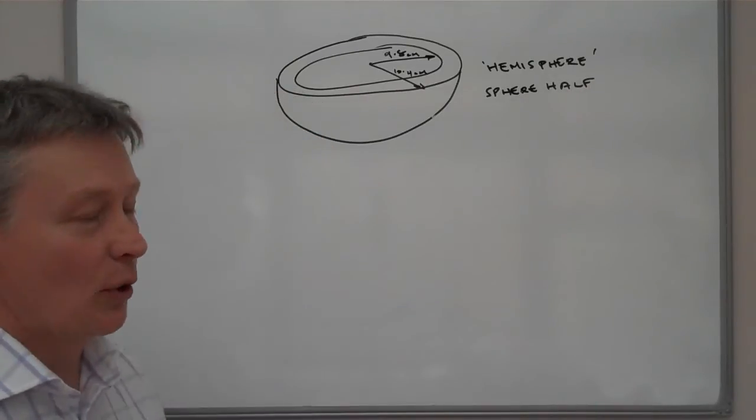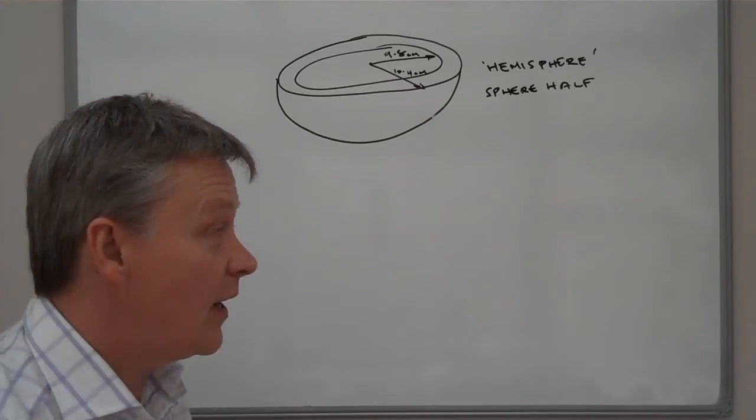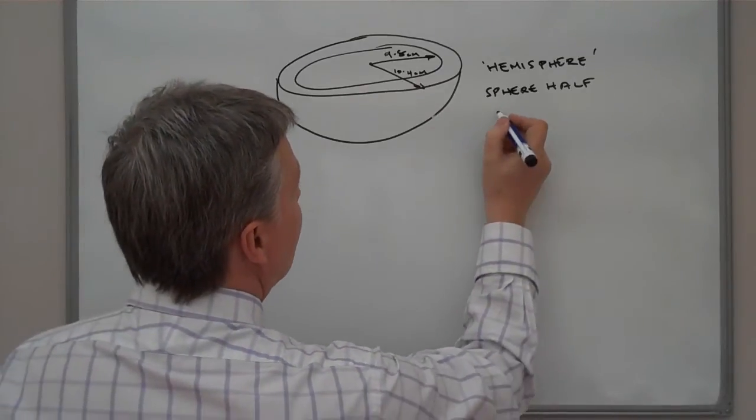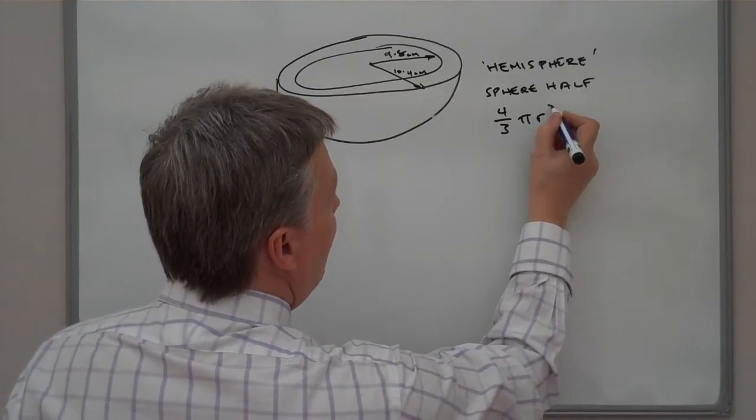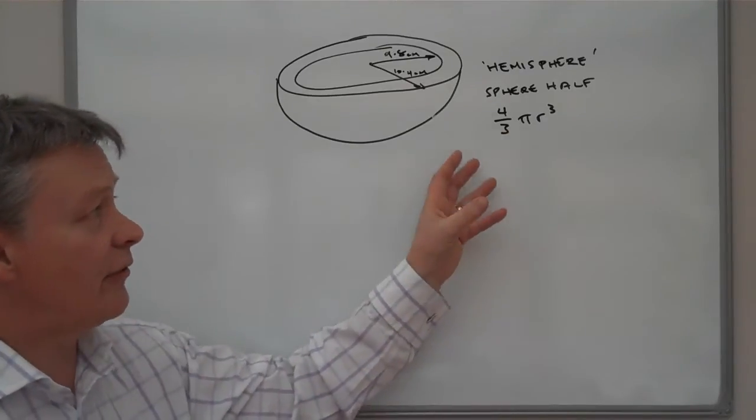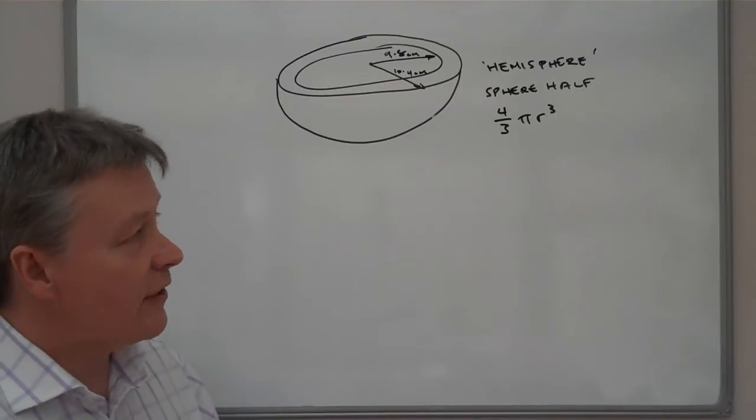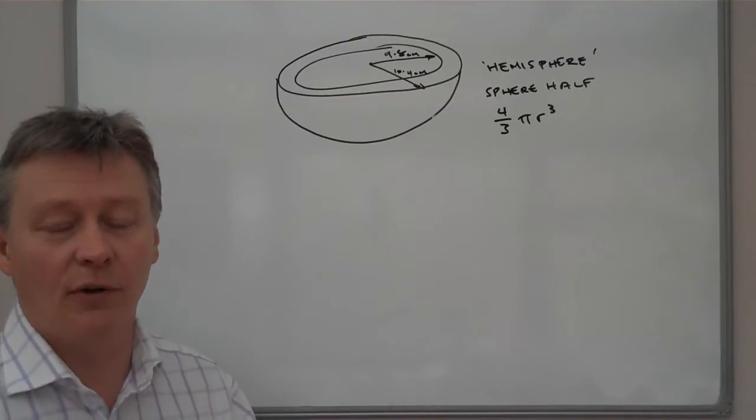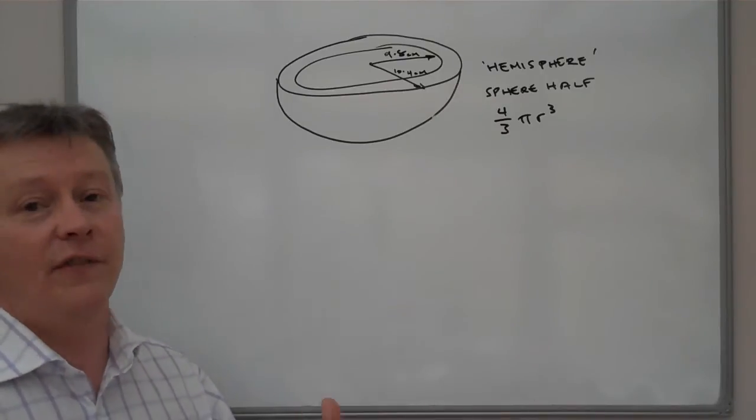Now in the front of the booklet, it will give you the formula for working out the volume of a sphere. And the information that you need is that it's four-thirds pi r cubed. So that's the information you've been given to work out the volume.